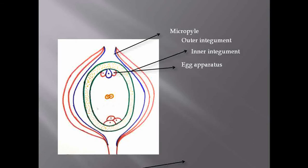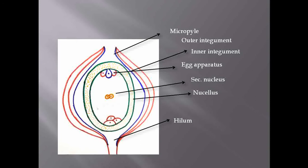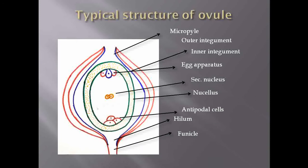Before moving towards the different types of polyembryony, we must have an idea about the typical structure of the ovule. For a clear understanding of polyembryony, we must know about the embryo sac — we must know what cells are present inside the embryo sac and outside the embryo sac. This is the embryo sac, which is generally eight-nucleated in angiosperms.